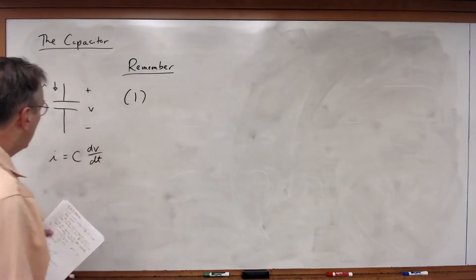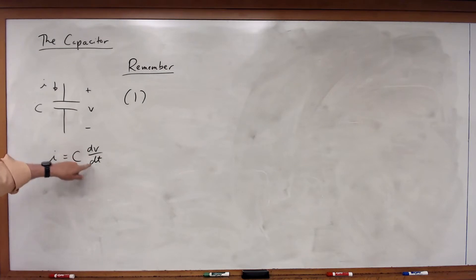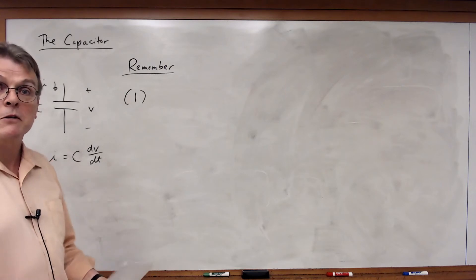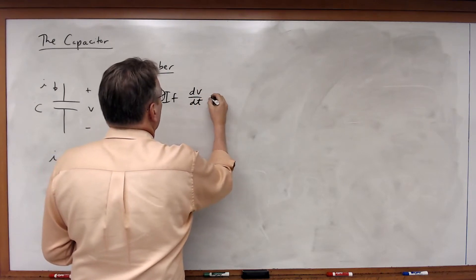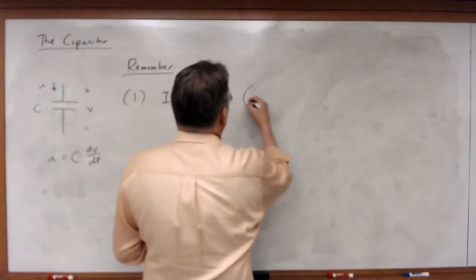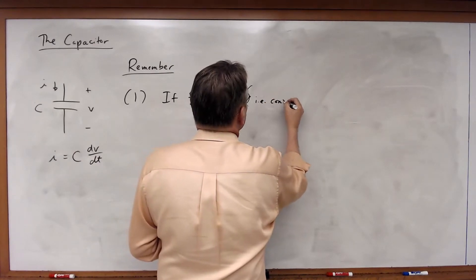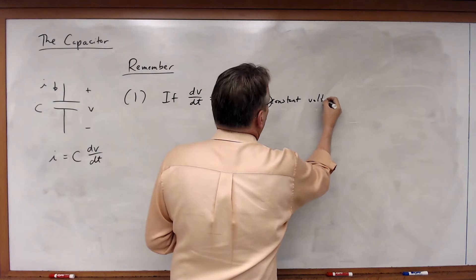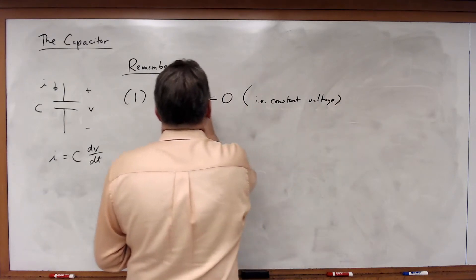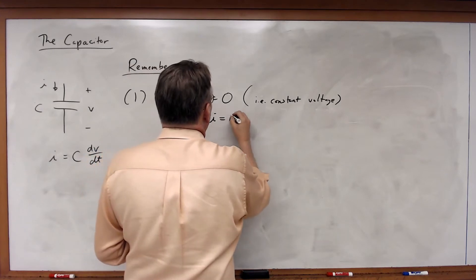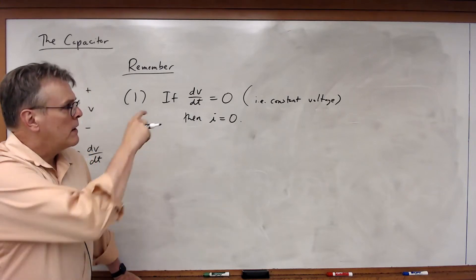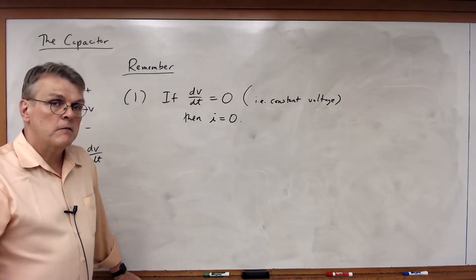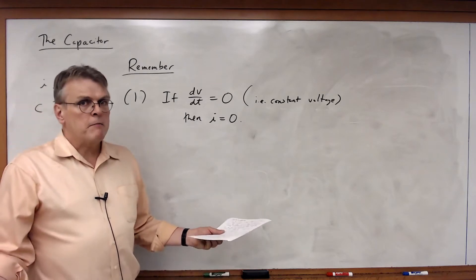First of all, if the voltage across a capacitor is constant, the current flowing through it must be equal to zero. So if dV/dt is equal to zero — i.e., constant voltage — then I is equal to zero. Or a way to think about it is this: if the voltage across the capacitor is constant, it looks very much like an open circuit.